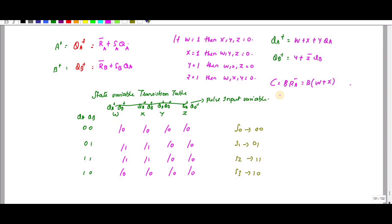Because W will be 1, we get 1 into 1. B represents QB, and C equals QB into (W plus X) bar.